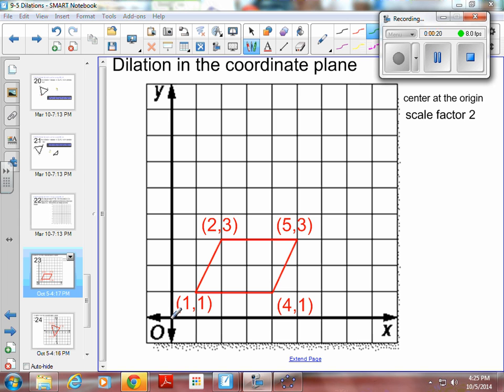So the point (1,1) becomes the point (2,2) and I put a point at (2,2). My point (2,3) becomes the point (4,6) and I put a point at (4,6). My point (5,3) becomes the point (10,6).